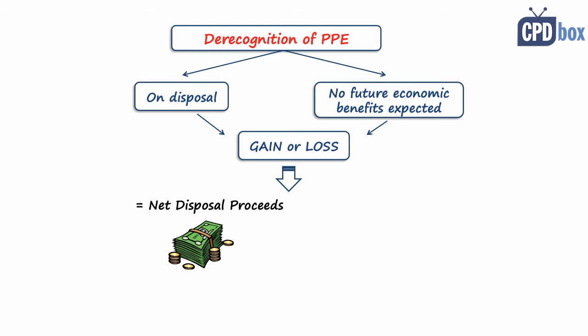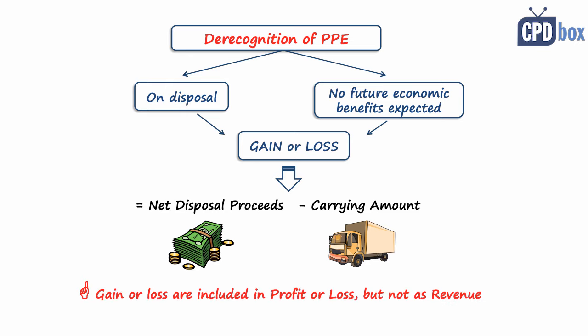calculated as net disposal proceeds less any carrying amount of property, plant and equipment. Gains or losses from disposals of property, plant and equipment are included in profit or loss, but not as revenue. Rather, these are shown as a gain from sale of PPE.